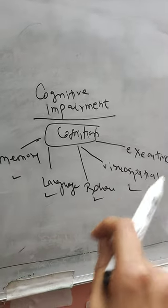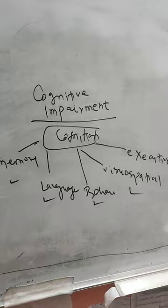If there is impairment in any of these domains, we call it cognitive impairment. In many neurodegenerative disorders, these cognitions are impaired.